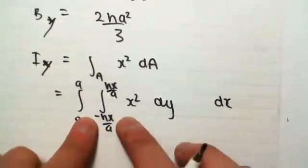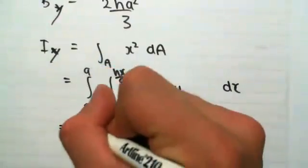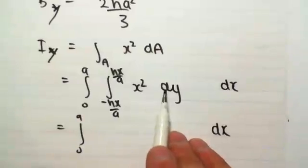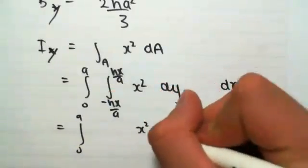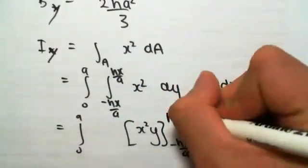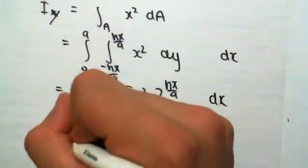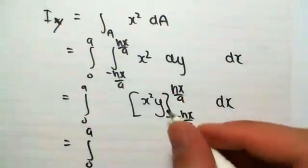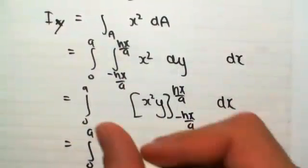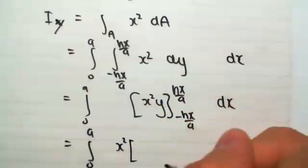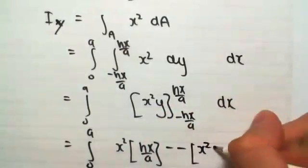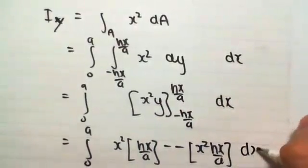So just putting the outside integral is on the outside for now. Integrating x squared dy. So think of the x squared as staying constant. You would get a y. This is between minus hx on a to hx on a. Solving for this, we're going to be subbing in, because it was dy, we're going to be subbing in these constants for y. So it's going to be x squared outside of hx on a, minus minus x squared hx on a, dx.